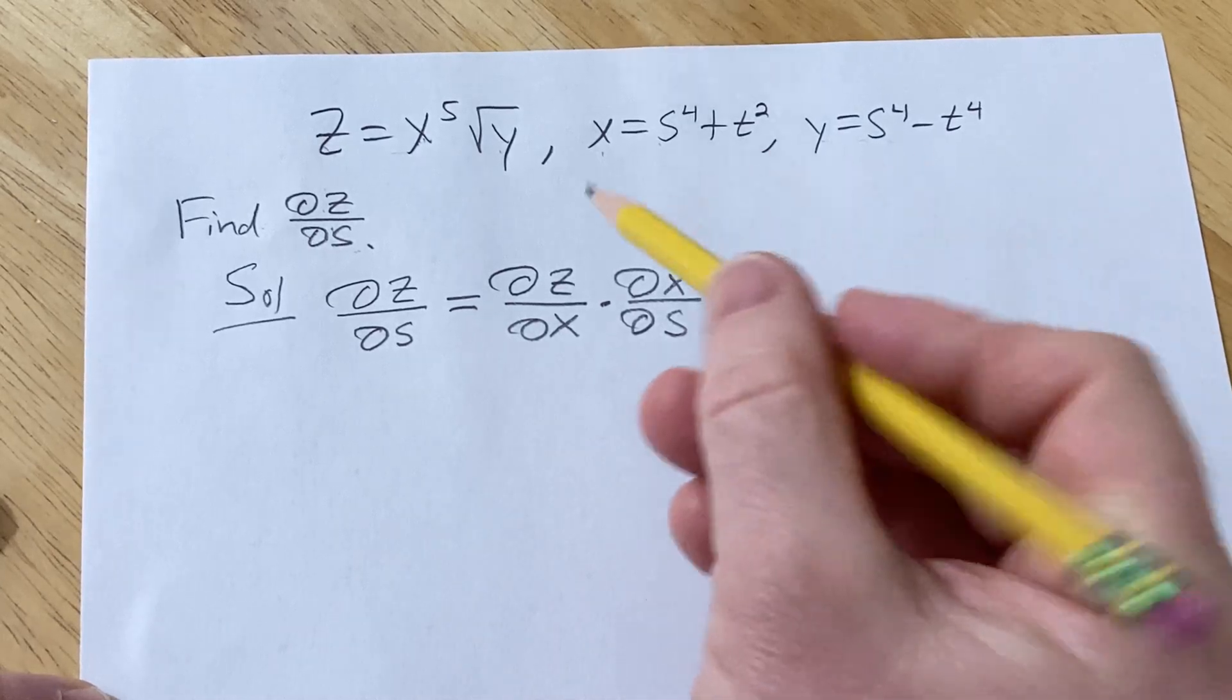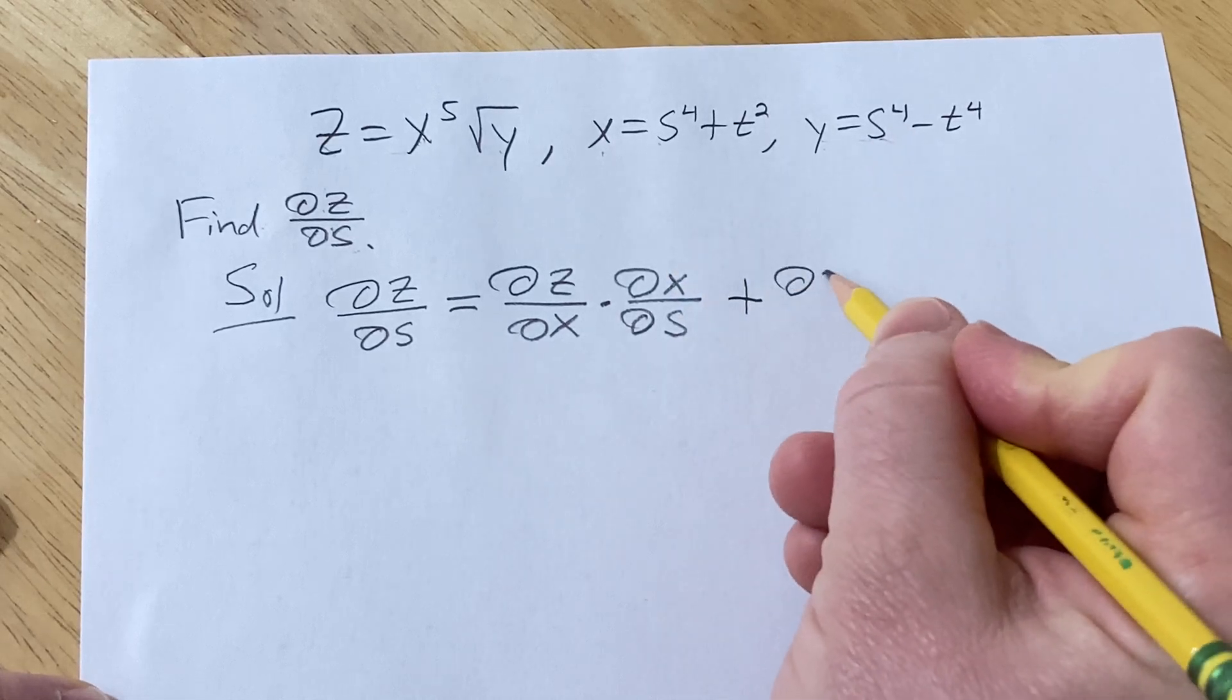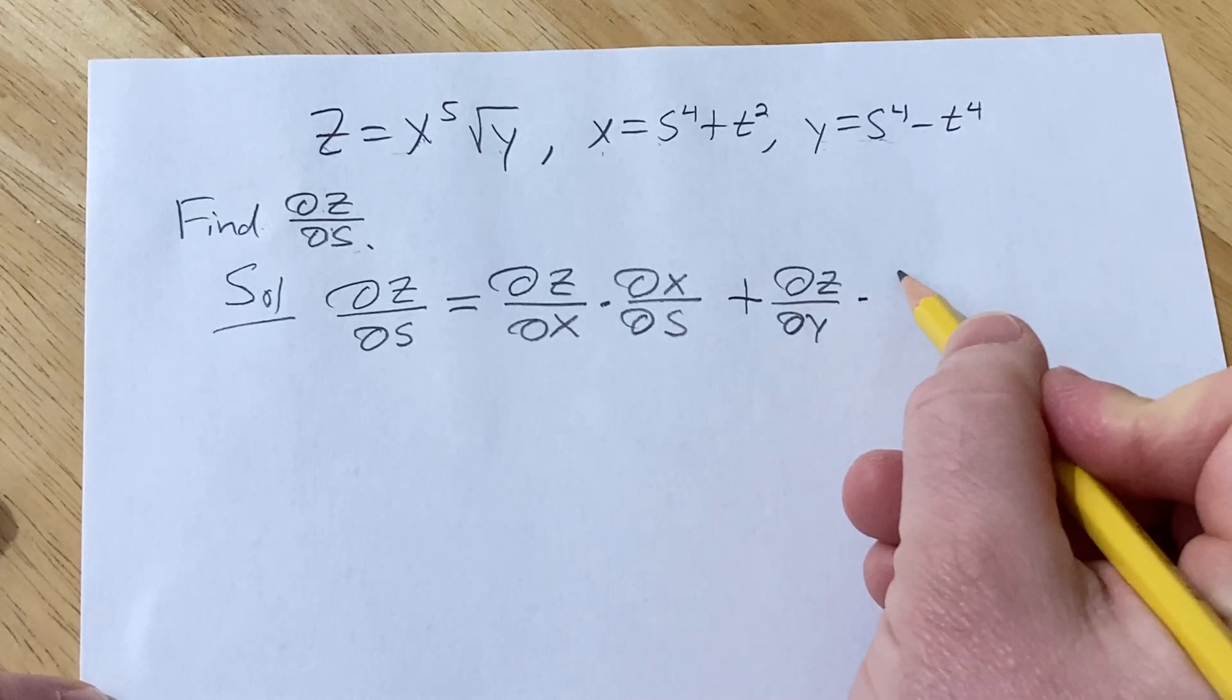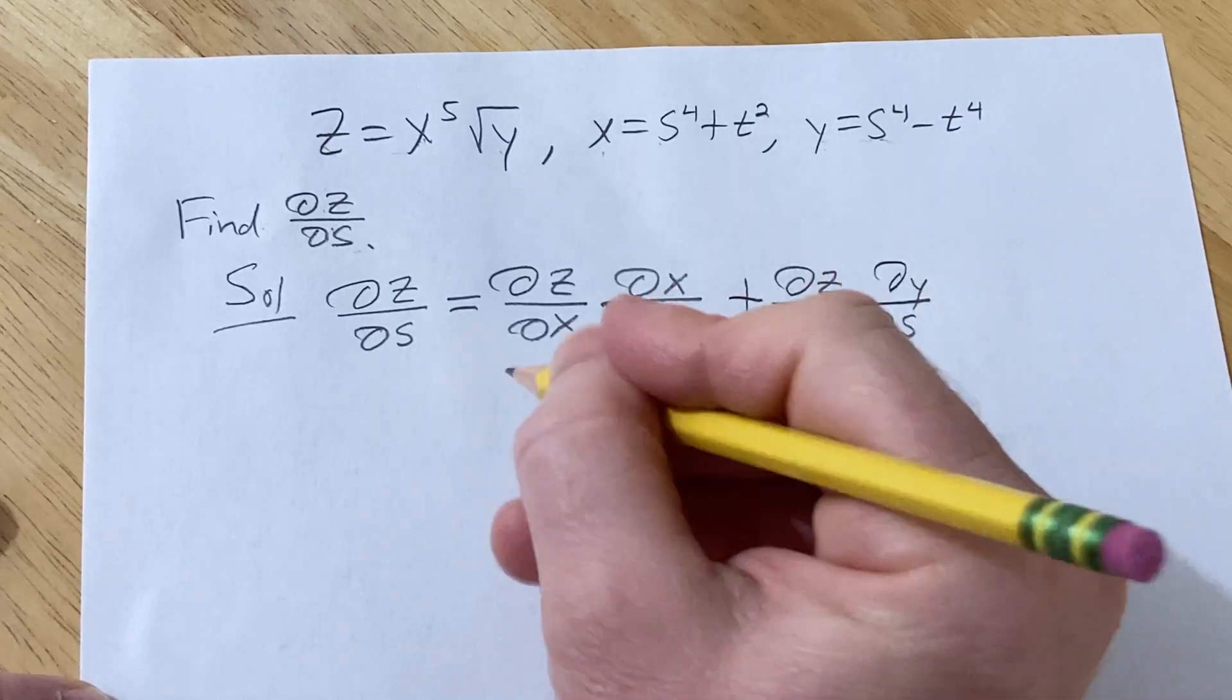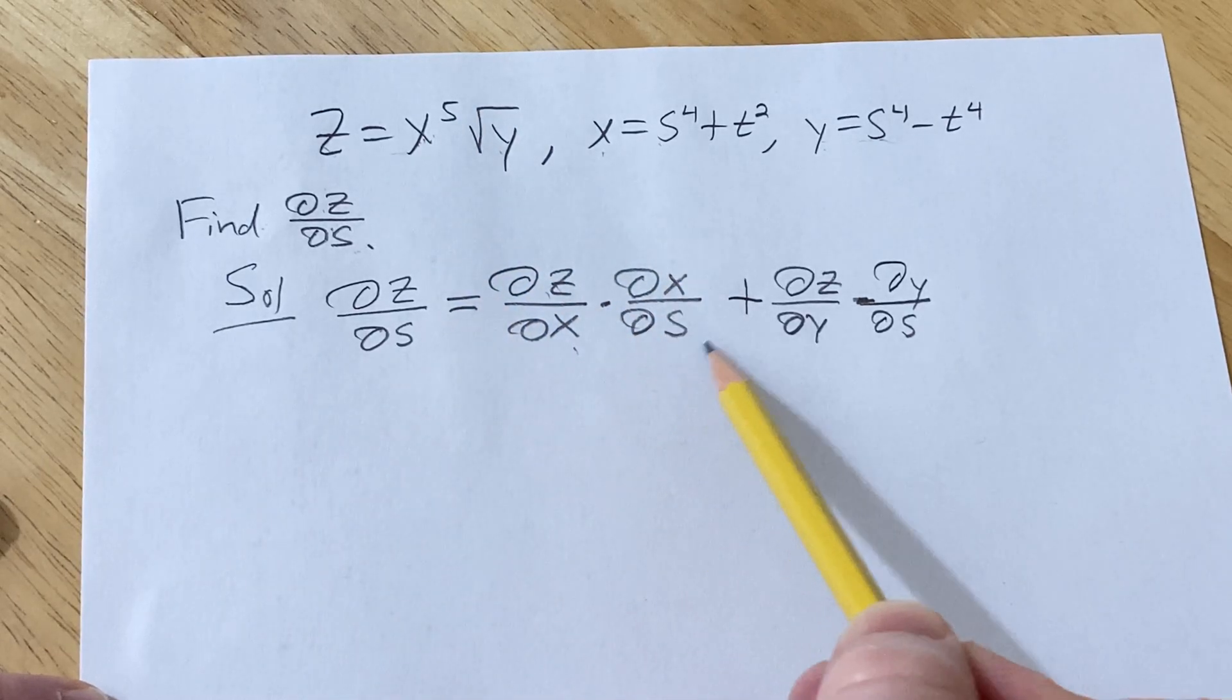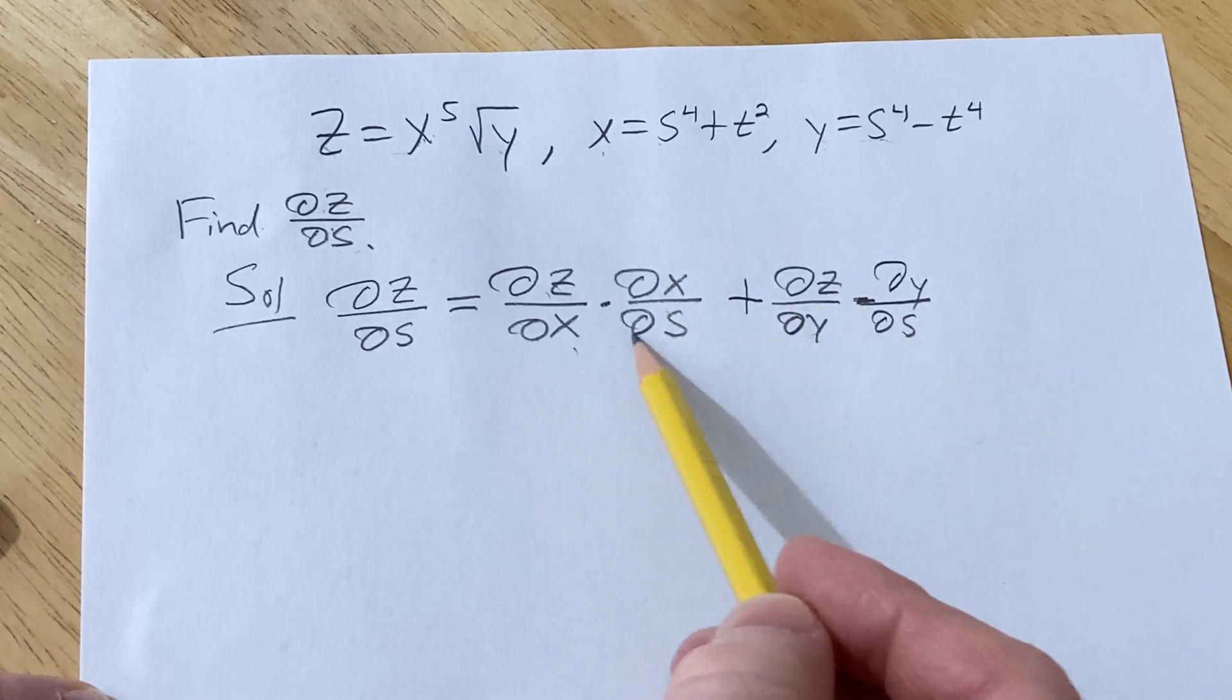Plus to get to s we can also go through y because y is dependent on s. So this would be the partial of z with respect to y times the derivative of the inside, the partial of y with respect to s. Okay so two ways to get to s: you can go through x (del z del x) and then you can go through y (del z del y), and then you multiply by these derivatives here.